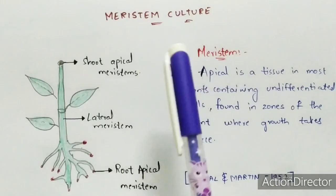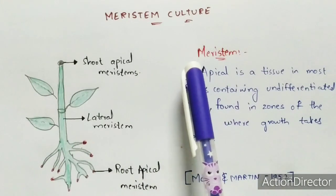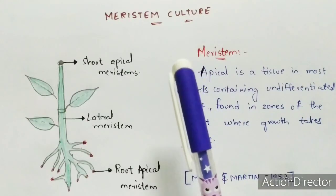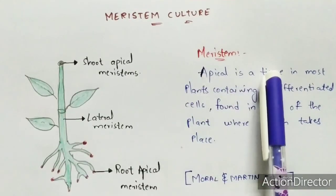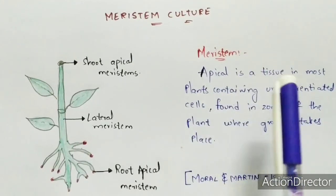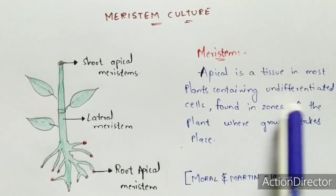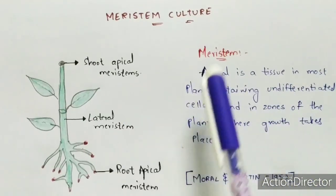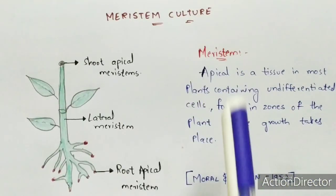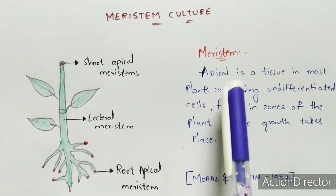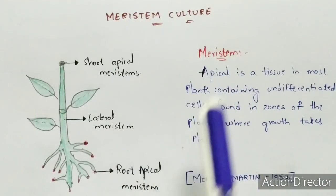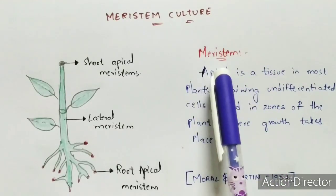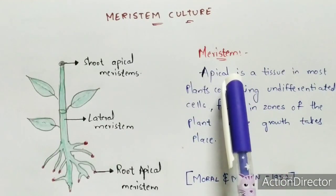In this video, let us discuss about meristem culture. Before entering into meristem culture, you have to know what is meant by meristem. Meristems will be of two types: apical meristem and lateral meristem. The apical meristem is a tissue in most plants containing undifferentiated cells found in the zones of the plant where growth takes place.